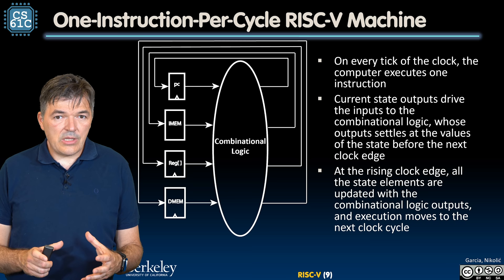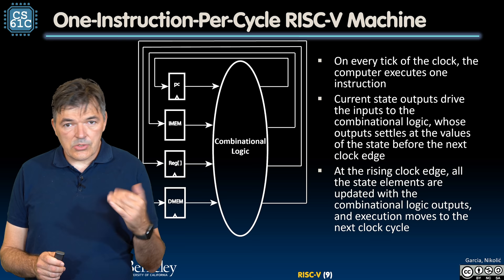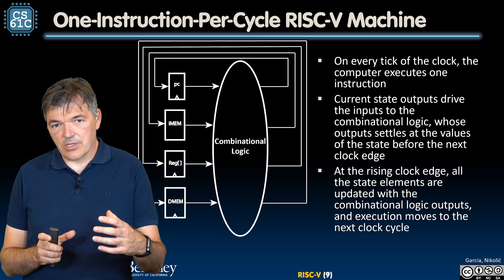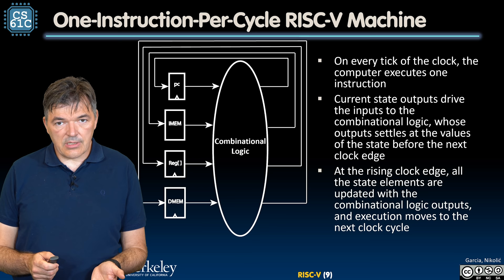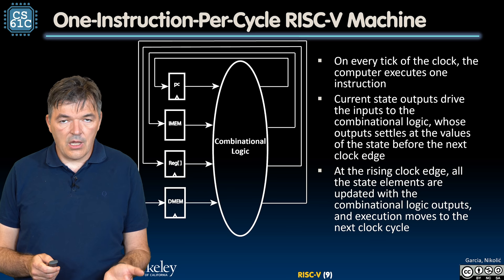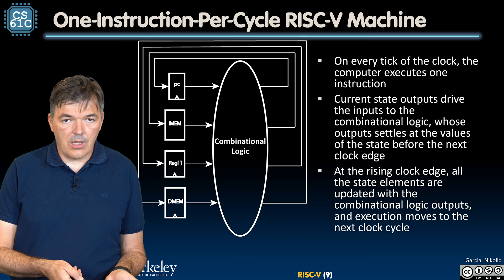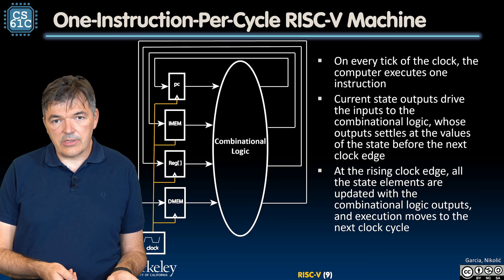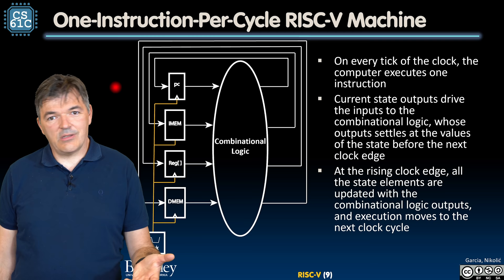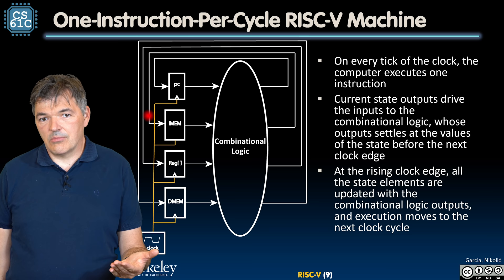But that's not practical, because many instructions are going to share the same data path. So in general, we are going to build this data path as a cloud of logic that can execute all the instructions. The instruction would start executing on the rising edge of a clock, go through the combinational logic, and present the outputs back to the state elements. On the next rising edge of a clock, we'll write it back as a new state. By doing that sequence repeatedly, we would execute all the instructions.